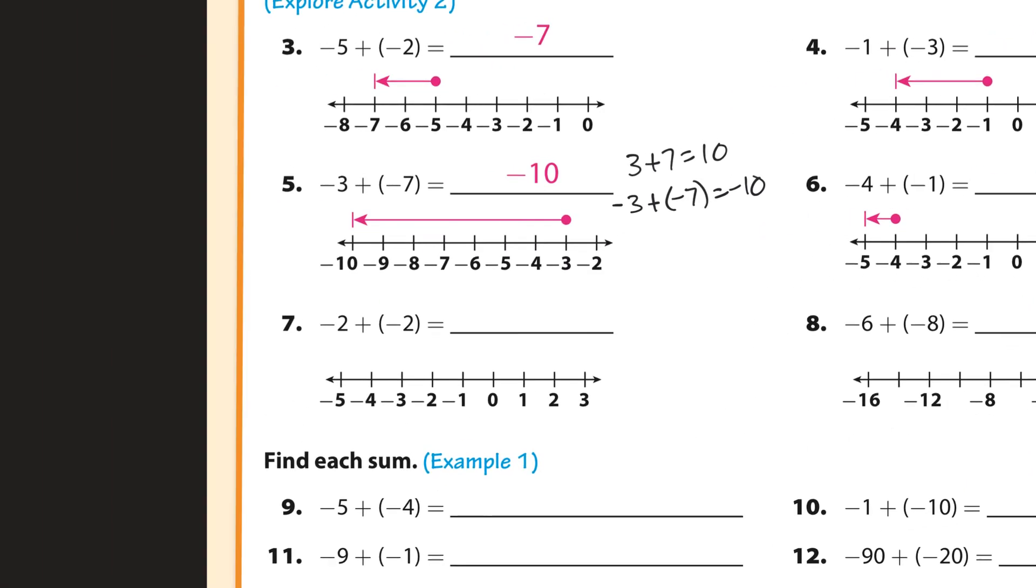And number 7, what we have is the negative 2 plus the other negative 2. It looks like this, right? We have negative 2 here, and then we add to that negative 2. So from here to negative 2 to the left, and you arrive at negative 4.